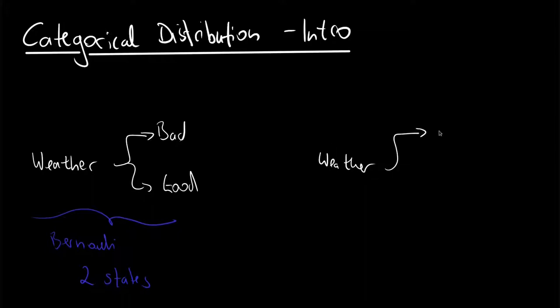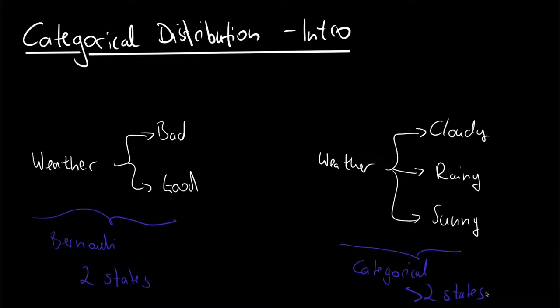But what if we want to consider the weather in more detail? So let's say it's cloudy, rainy, or sunny. For this we would need a categorical distribution, because the categorical allows us to consider more than two states.